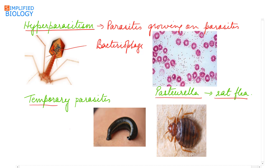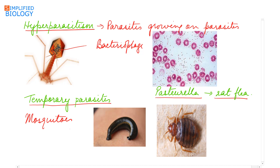The next type is temporary parasites. Temporary parasites do not always remain attached to the surface or body of the host; they get attached only for a short period and then move off. Examples include mosquitoes, leeches, and bed bugs.